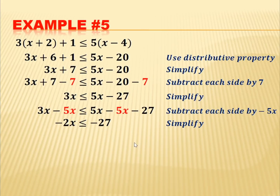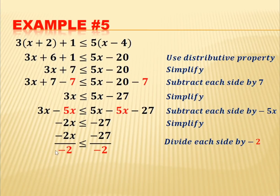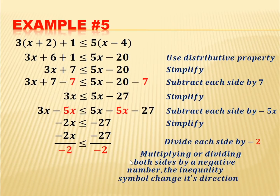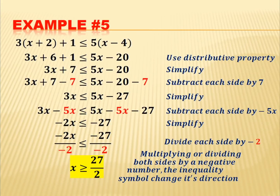We subtract 5x from both sides: 3x minus 5x is less than or equal to 5x minus 5x minus 27. That gives negative 2x is less than or equal to negative 27. Now we divide each side by negative 2. Take note: when multiplying or dividing both sides by a negative number, the inequality symbol changes direction. Since we divide by negative 2, we change the direction, so x is greater than or equal to 27 over 2.